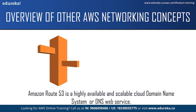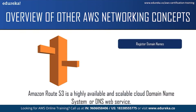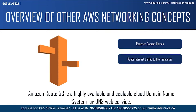Route 53 performs three main functions. First, it registers your domain name. Every website needs a name — be it edureka.co or anything like facebook.com. Route 53 lets you register a name for your website or web application, known as a domain name. The second function is it routes internet traffic to the resources for your domain. When a user opens a web browser and enters your domain name or subdomain name in the address bar, Route 53 helps connect the browser with your website or web application.